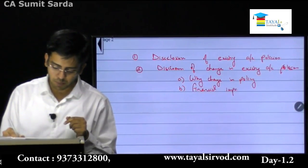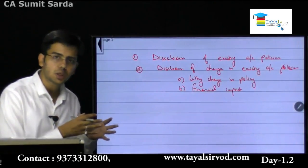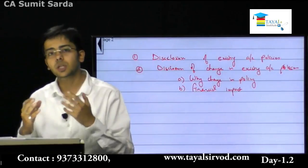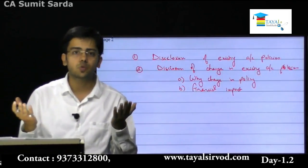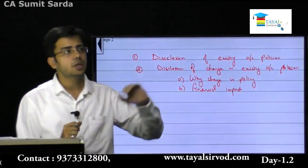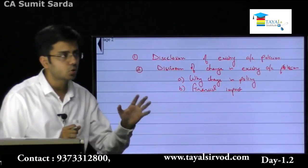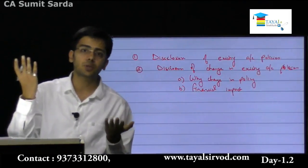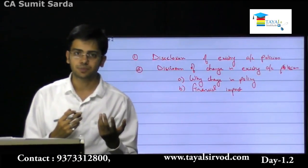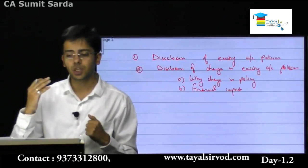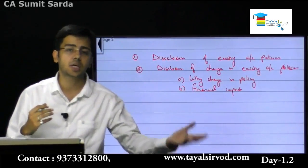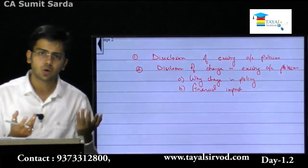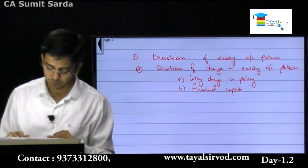When a policy is changed, we must specify the financial impact - how much amount would have been recognized under the old policy versus the new accounting policy. For example, if we were valuing inventory as per LIFO and closing stock was 10 lakh rupees, and from the current year we move to FIFO giving a closing stock of 15 lakh rupees, the profit has increased by 5 lakh rupees. That is the financial impact to be disclosed. Note that LIFO has not been permitted by ICAI anymore.